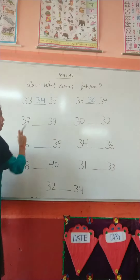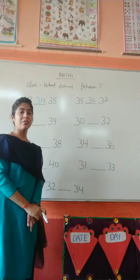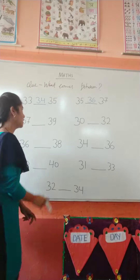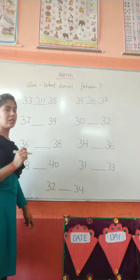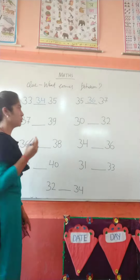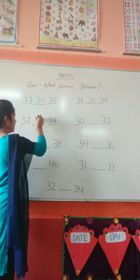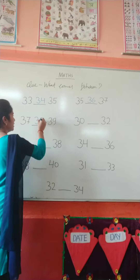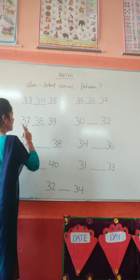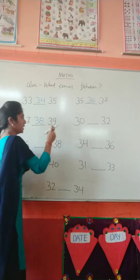And which number is this? Here is number 37, and here is 39. What comes between 37 and 39? 38. 37, 38, 39.